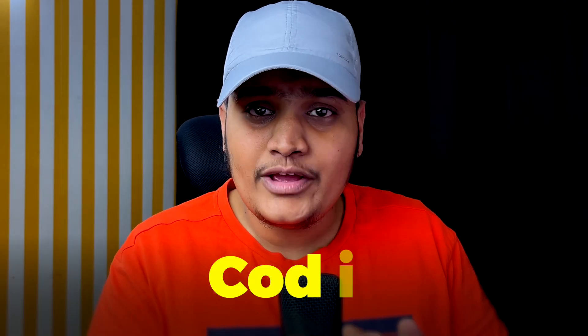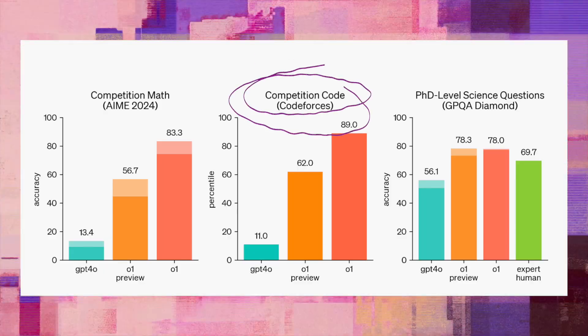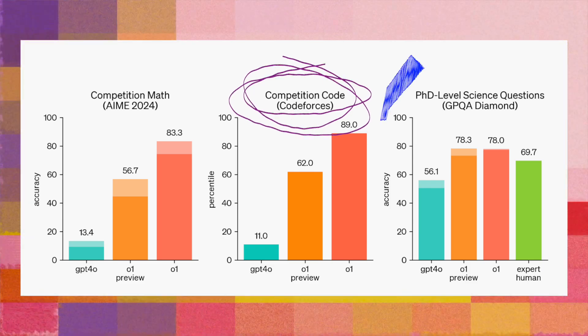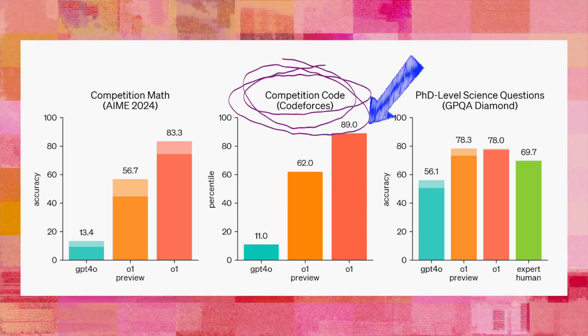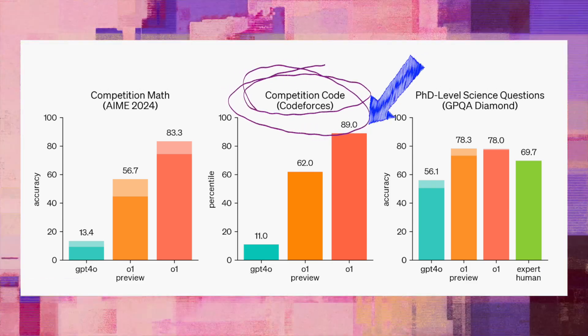Some examples of what this model has been used for: it is mainly used for coding purposes to generate code — better code than previous models. They have defined that the O1 model for coding is much better, ranked around the 89th percentile compared to previous models, so you will be able to generate higher quality code.